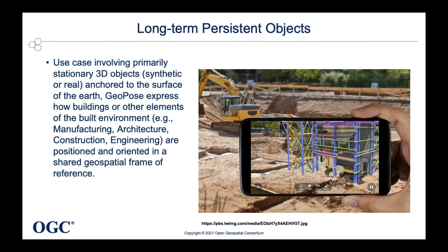For industries like construction and architecture, things are not so dynamic. It's more a situation where you want to anchor data to the real world with more accuracy — not just a coordinate, but also the position of the whole dataset. That might be a BIM model, an architectural visualization, or infrastructure under the ground. The key is communicating between all these different systems in a seamless way by expressing the position and orientations of all these datasets between them.